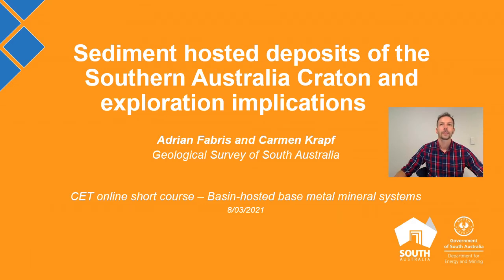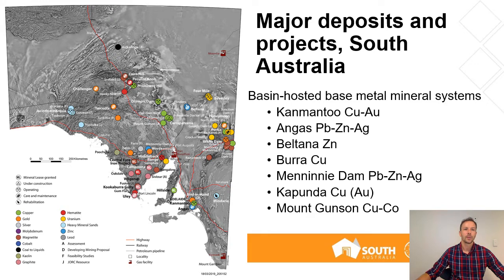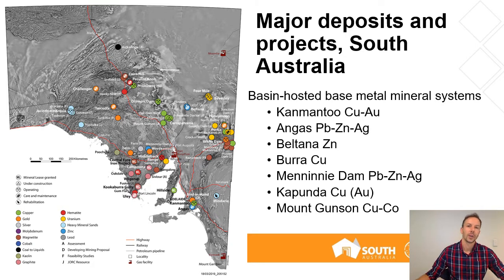I'll start with a map showing major deposits in South Australia. While we have world-class zirconium and significant uranium deposits within basins, South Australia isn't really known for large basin-hosted base metal deposits. But notably, we do have the Kapunda deposit located just north of Adelaide, which was actually the first metal mine in Australia, and Burra, which was actually the largest deposit in Australia for 10 years from 1845. Together these two mines form the cornerstone of the South Australian economy after colonisation.